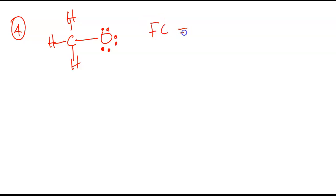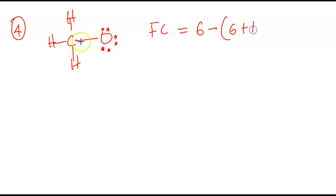So the formal charge of this oxygen is going to be: oxygen is in group 6, minus the number of dots you have here — two, four, six — six dots, plus one bond. Six minus seven gives you negative one. So here it is also negative one again.